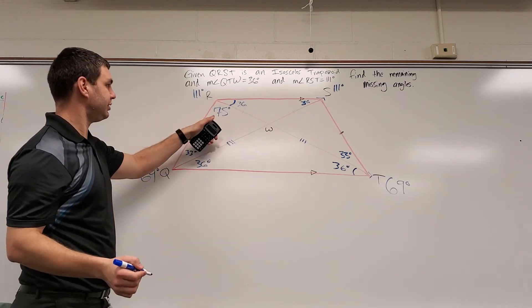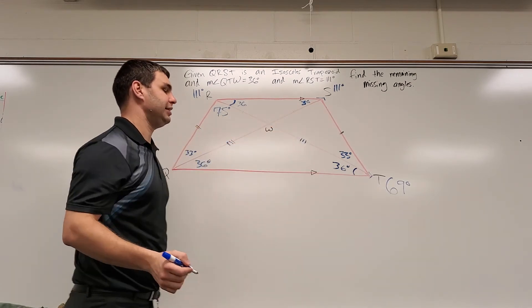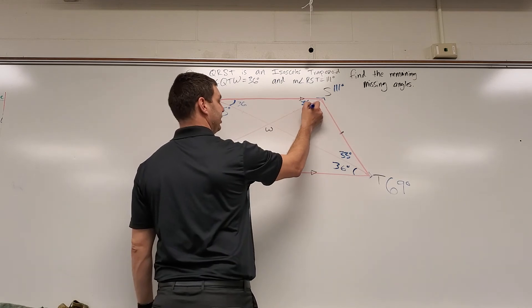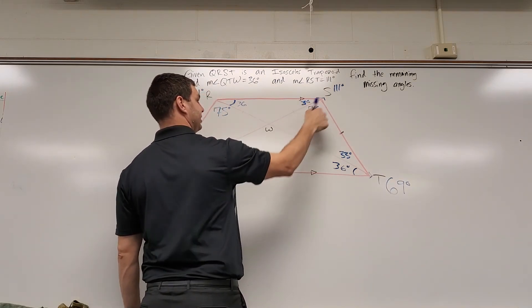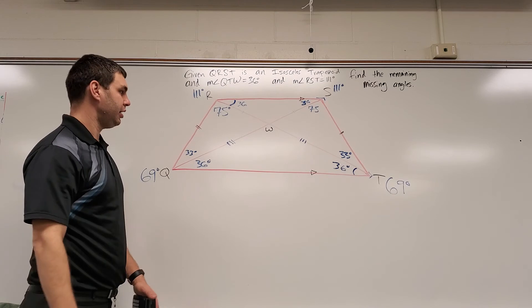So if that's 75 degrees, then over here on this side is also 75 degrees. Again, 75 plus 36 has to equal 111.